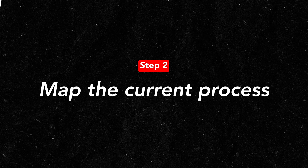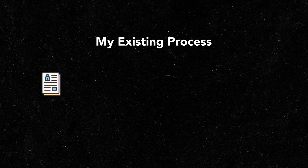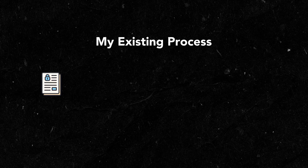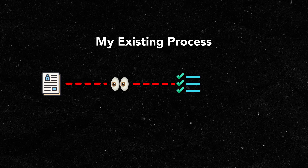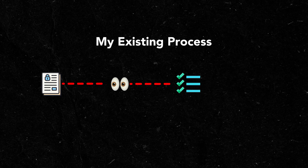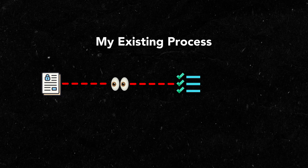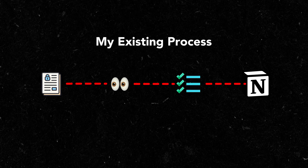Step two: map the current process. Before you build, you need to walk through the pain yourself. Time yourself doing the task once, and if it doesn't hurt that much, maybe skip automating it. You don't want to waste your time. But if it does, create a diagram of every step in the process. In my example I receive the signed document back from the client, I read through the document, make notes of key terms such as payment amounts and exclusivity clauses, and then I add these to my Notion dashboard.